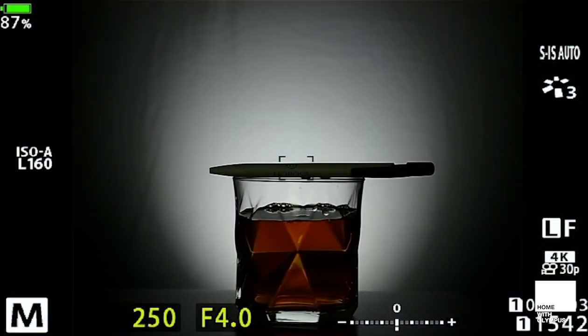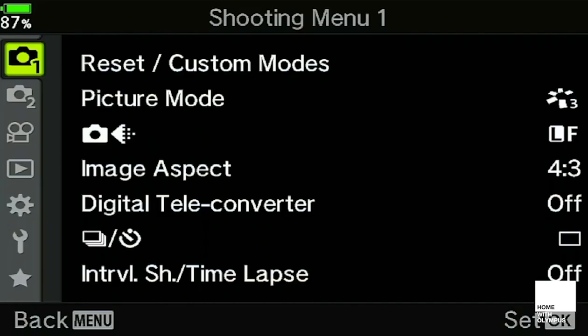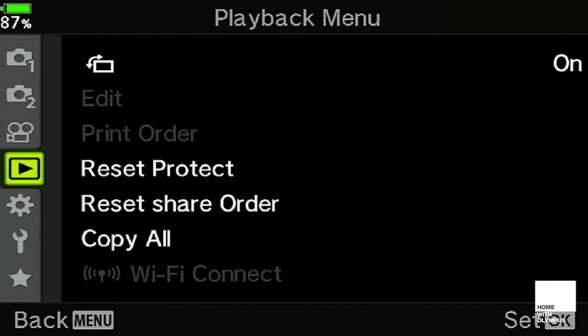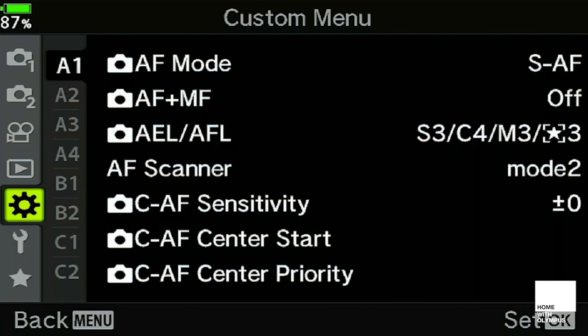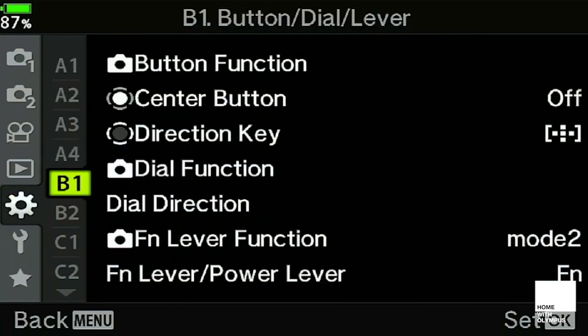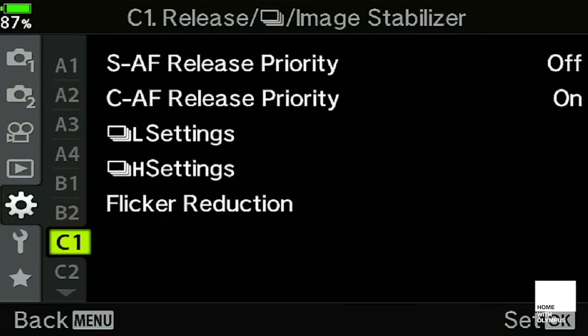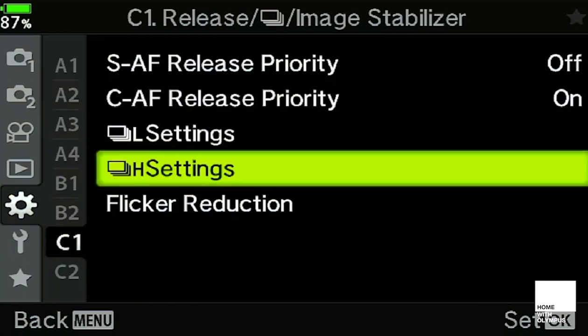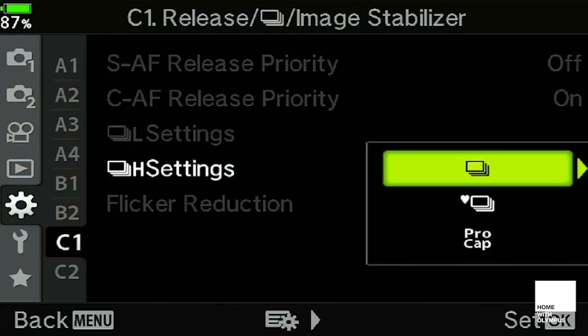So from a completely reset camera, I'm going to go into the ProCapture settings and set everything up that I need to shoot with. So we'll press menu, and then once we're in the menu we'll go down to the cog icon, and from the cogs across into C1—this is where we set the custom releases. And then we'll go over to H settings because we're using ProCapture high speed, and the third option down there is ProCap.